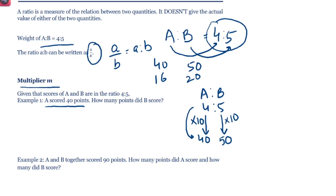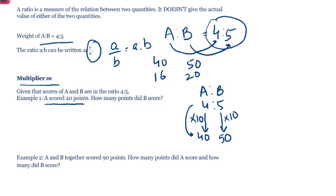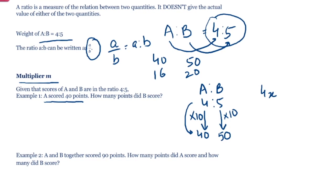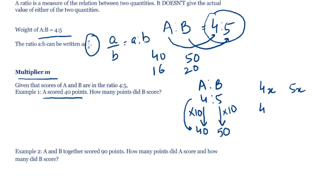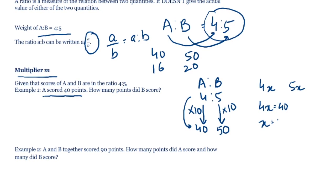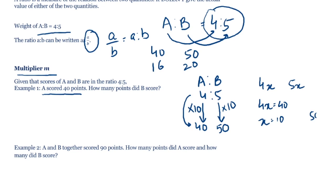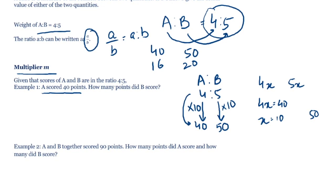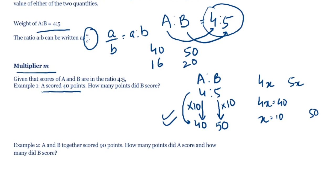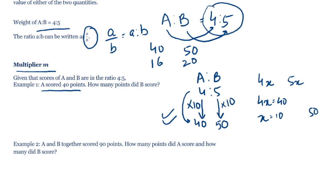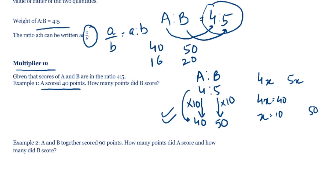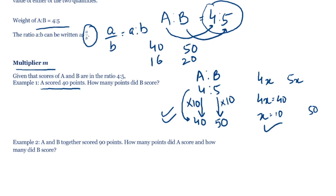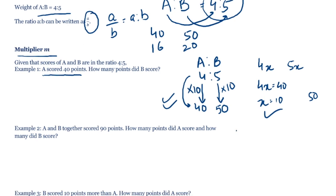This is no different from algebra. We can say the score of A is 4x and the score of B is 5x. Given A scored 40 points, 4x equals 40 so x equals 10, and B's score is 50. The multiplier method helps us visualize it faster without writing equations, so we can often do it in our heads. We'll use this method, and also algebra when useful.